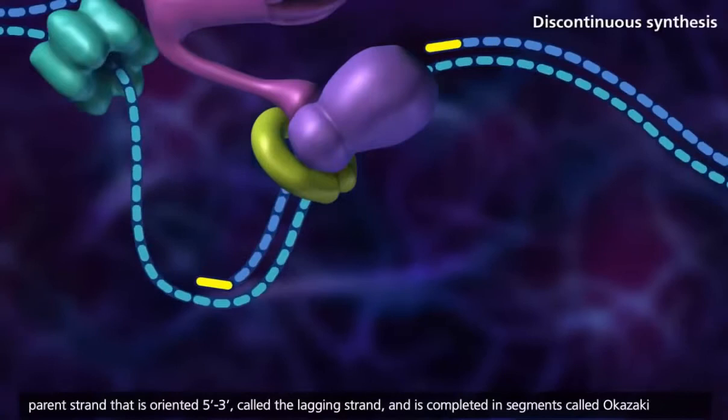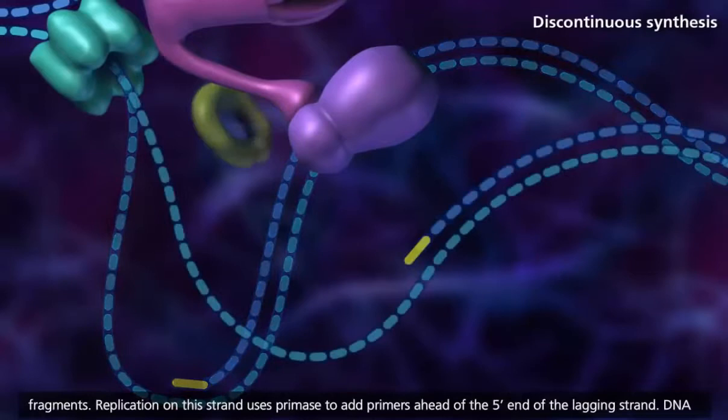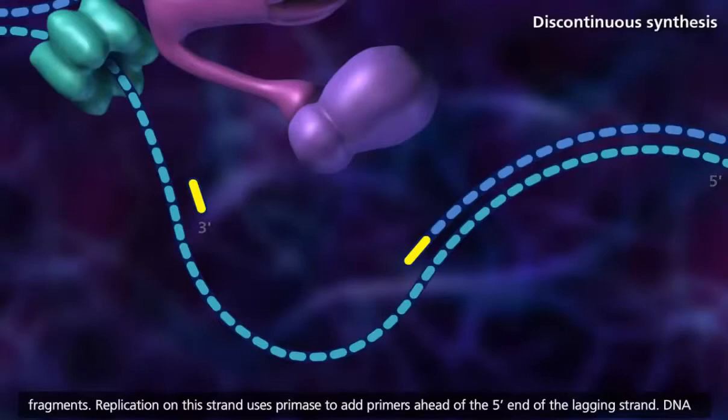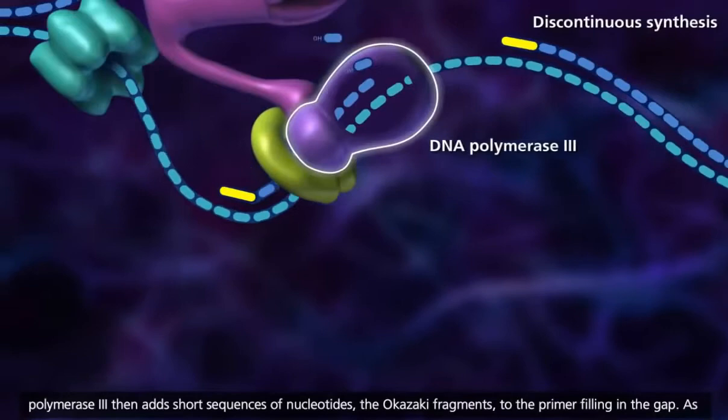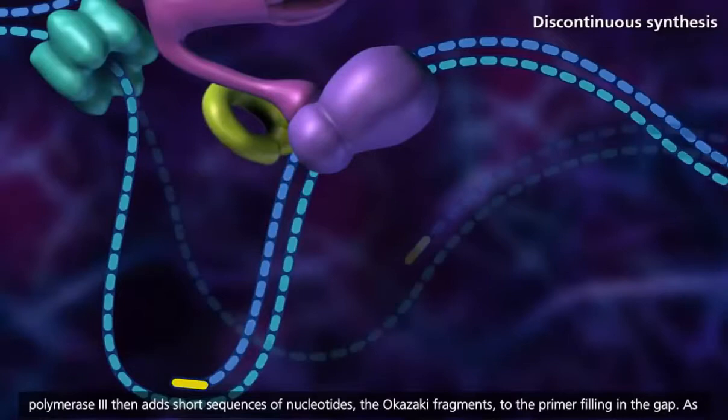Replication on this strand uses primase to add primers ahead of the 5' end of the lagging strand. DNA polymerase 3 then adds short sequences of nucleotides, the Okazaki fragments, to the primer filling in the gap. As the helix is opened further, this process repeats until the entire strand is replicated.